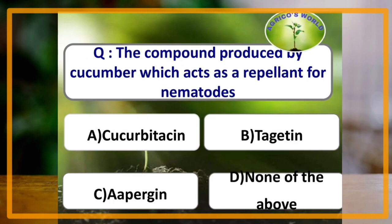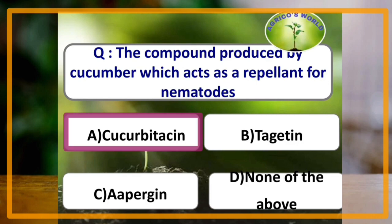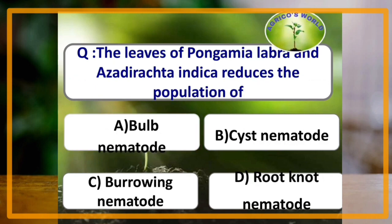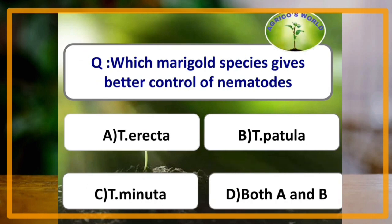The compound produced by cucumber that acts as a repellent for nematodes is cucurbitacin. Leaves of Pongamia and Tagetes erecta reduce the population of root knot nematode. Tagetes erecta and Tagetes patula both give better control of nematodes.